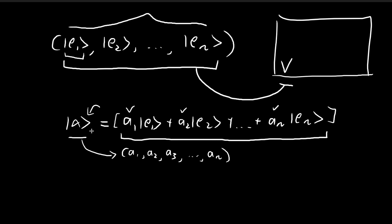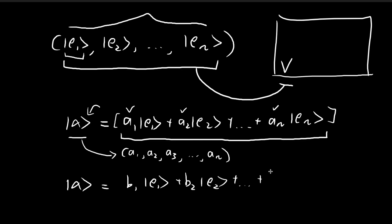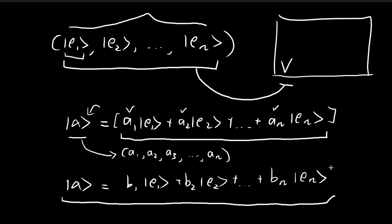We're going to use proof by contradiction. We assume that it is possible to come up with a different set of scalars which would allow us to construct another linear combination that would also be equal to alpha. We assume this is true, and then we'll see if it leads us to a contradictory conclusion. If it does, then we can conclude that it's impossible to find a different set of scalars, proving uniqueness.